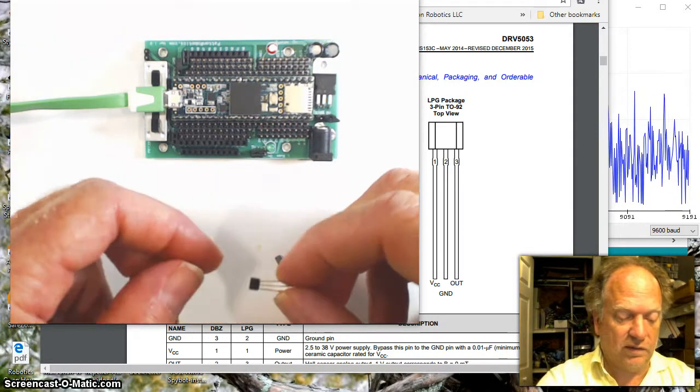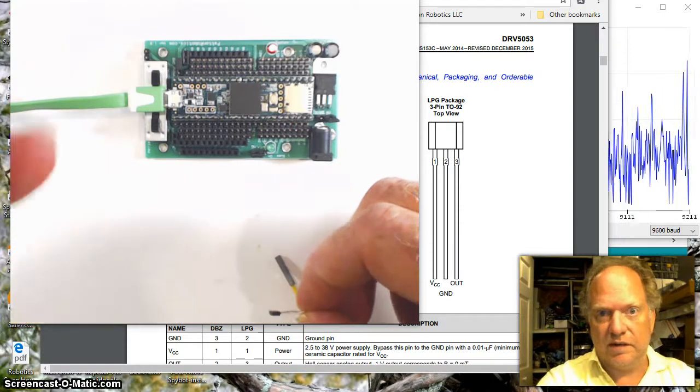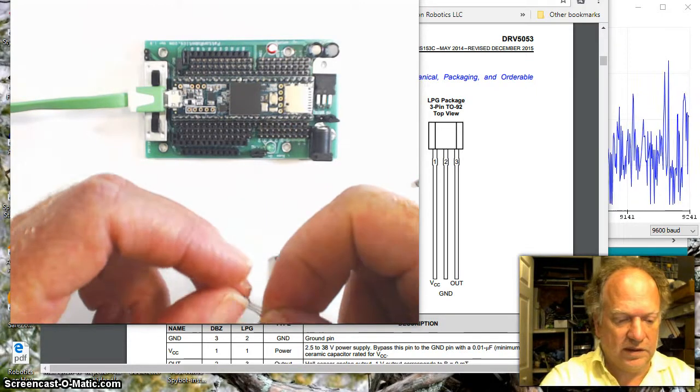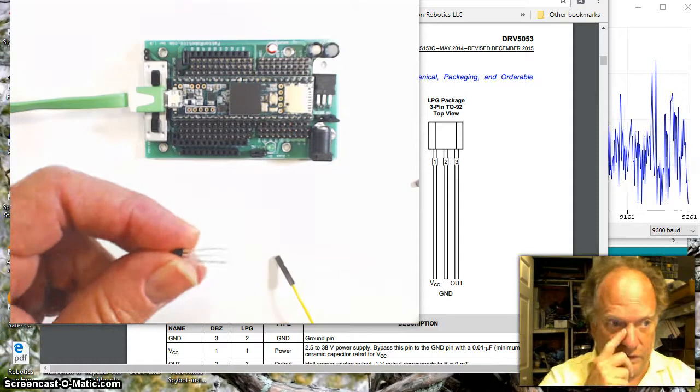You can use them for measuring, for example, the rotation of an axle or anything—alarm systems, anything to do with measuring a magnetic field.